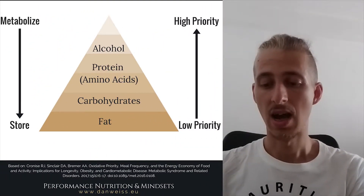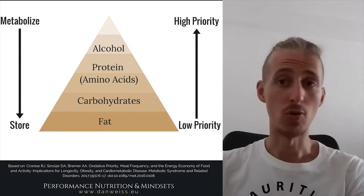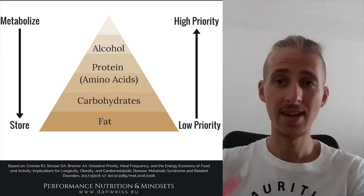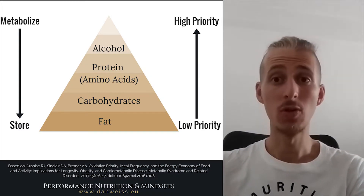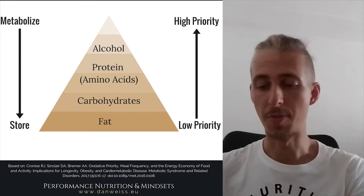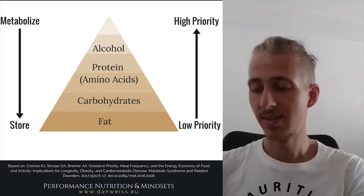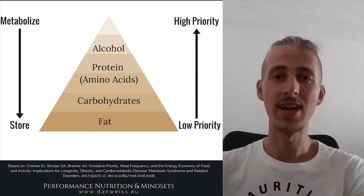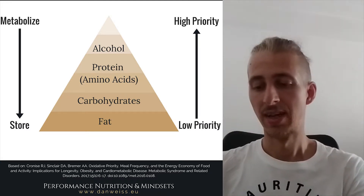So without further ado let's start. In 2017 there was a study, and as you can see I created this short infographic — a pyramid schematic — that speaks about the macronutrient oxidation priority. As you can see, on the top of the pyramid is alcohol, then proteins and amino acids, then carbohydrates, and then fats. What it means is that alcohol is the easiest and has the priority to be burned for energy right in the moment, while fat is the most readily available for fat storage.